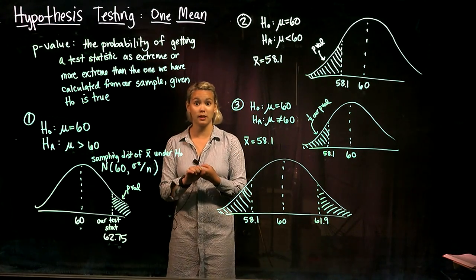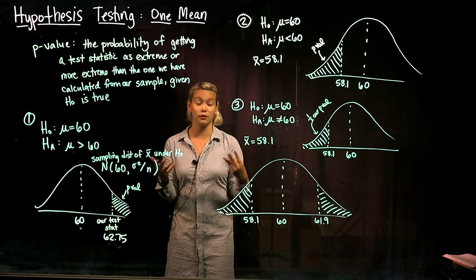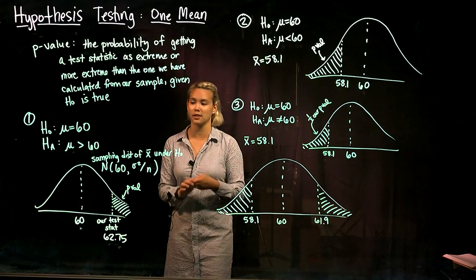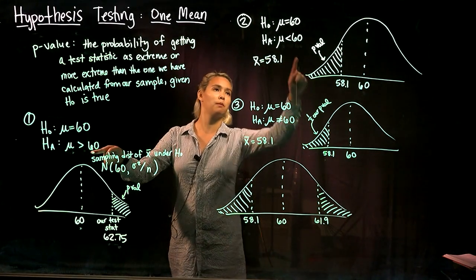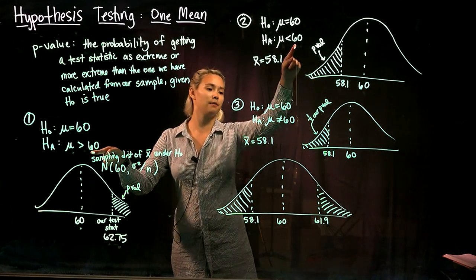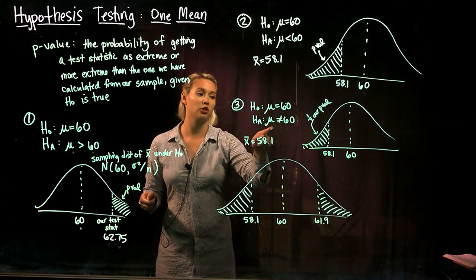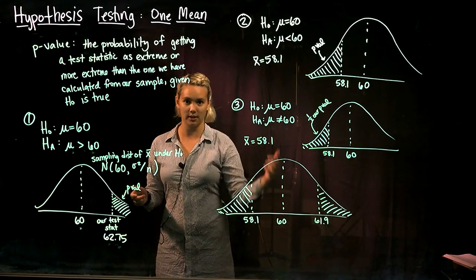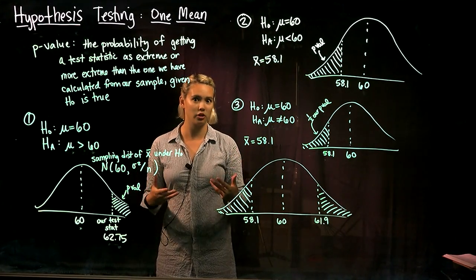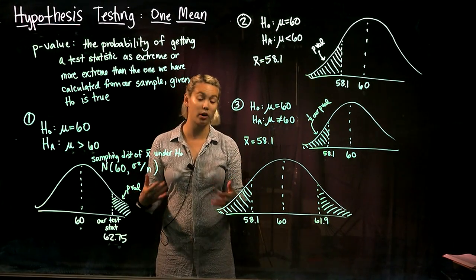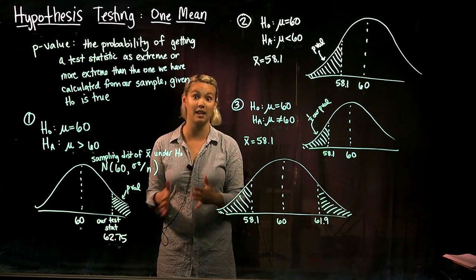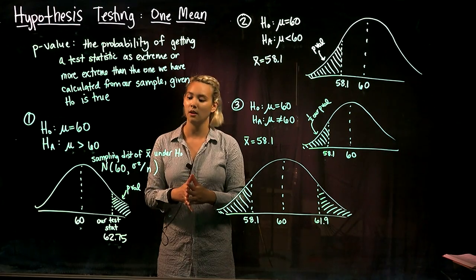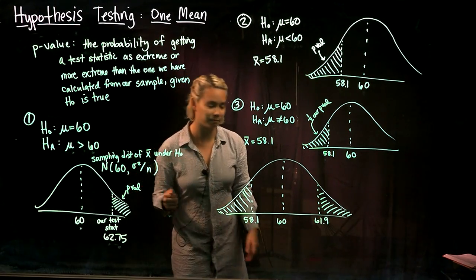So again, we can have three different types of alternative hypotheses. We could have parameter greater than some value, parameter less than some value, or parameter not equal to some value. We have to pay attention to what our alternative hypothesis is, because that defines how we calculate our p-value.